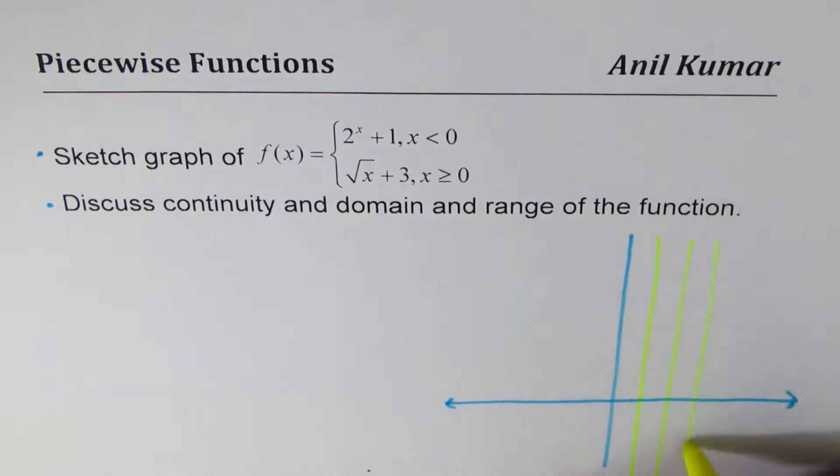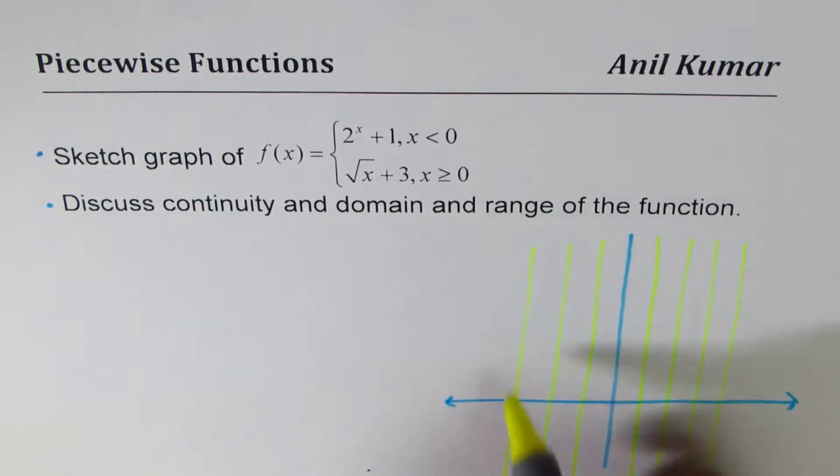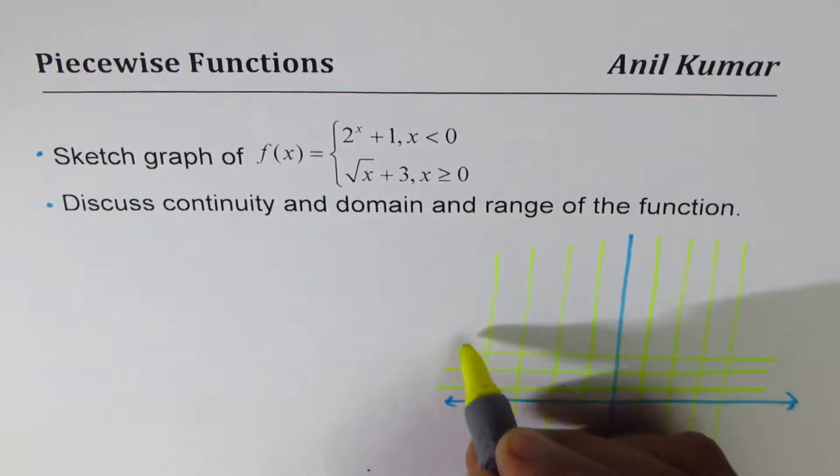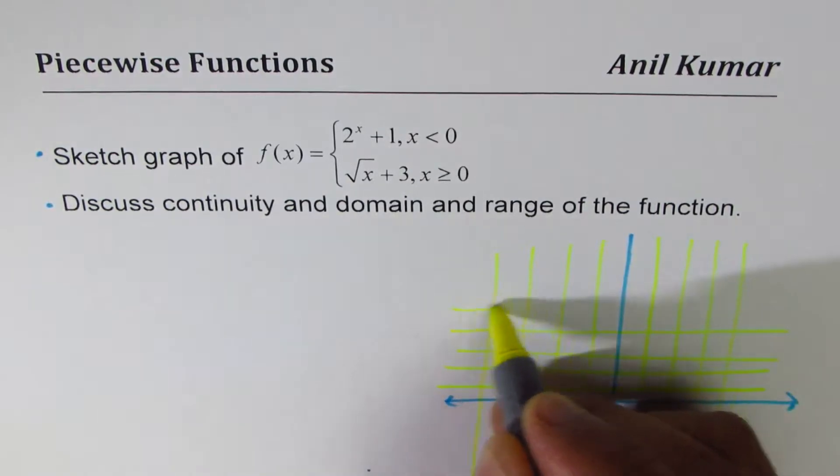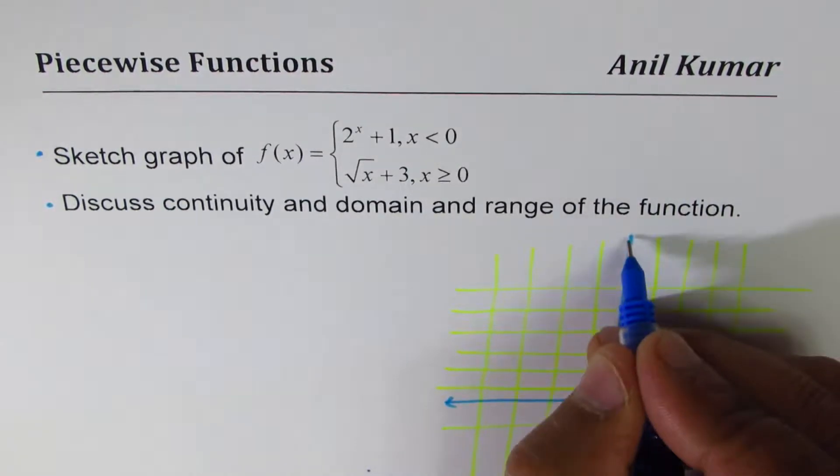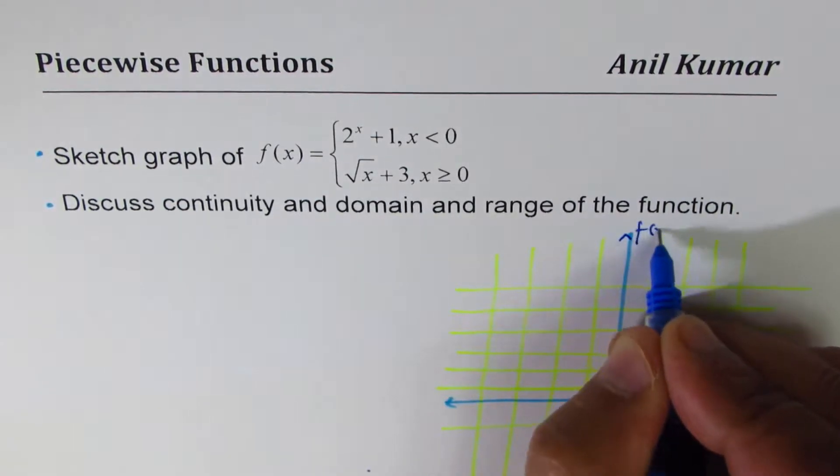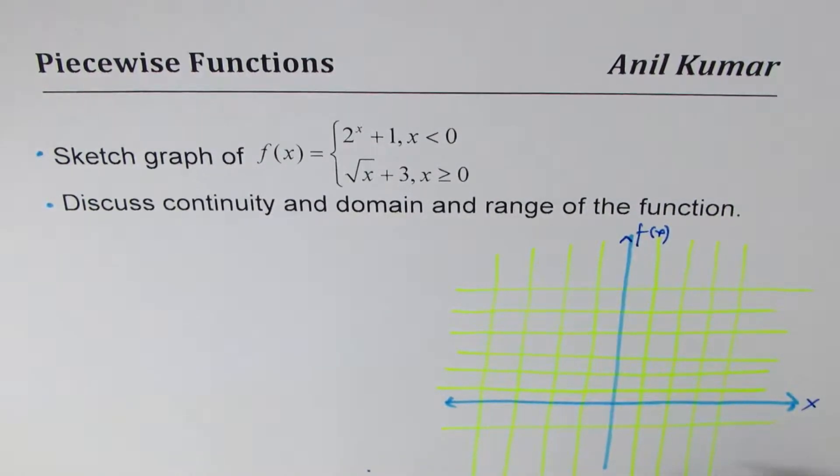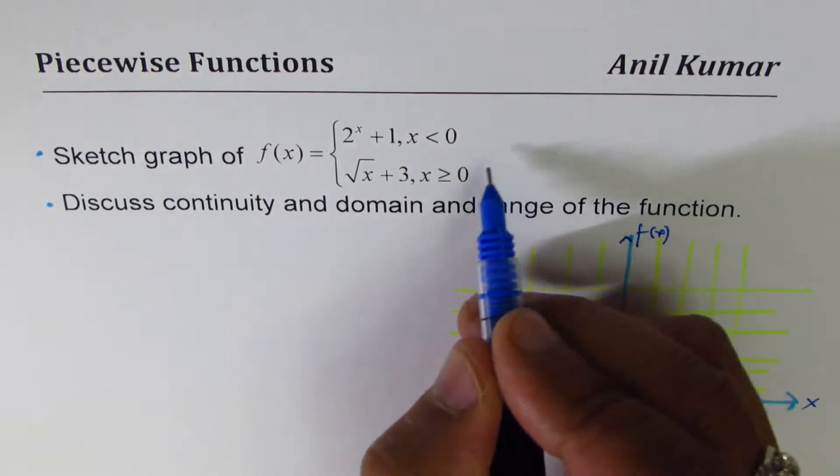Let's see, these are the horizontal lines. Okay, there we go. So this is f(x), this is x. Now we'll begin with the first part which is less than 0.